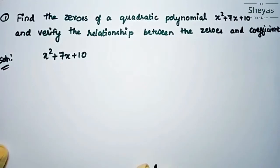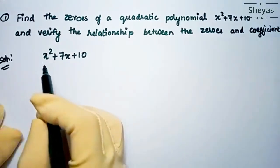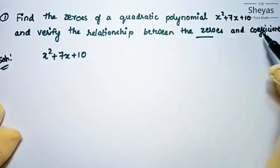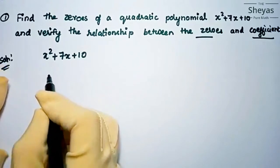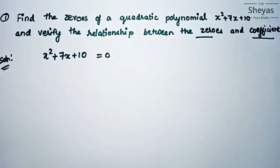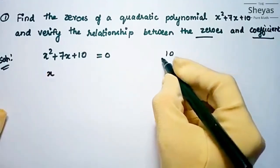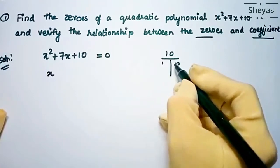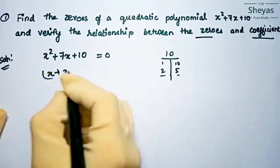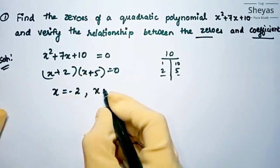First problem: find the zeros of the quadratic polynomial x squared plus 7x plus 10, and verify the relationship between the zeros and coefficients. We equate the polynomial to zero: x squared plus 7x plus 10 equals zero. Factorizing — since 2 times 5 equals 10 and 2 plus 5 equals 7 — we get x plus 2 times x plus 5 equals zero. So the zeros are x equals minus 2 and x equals minus 5.